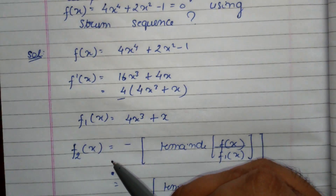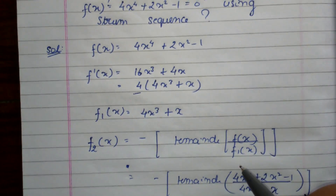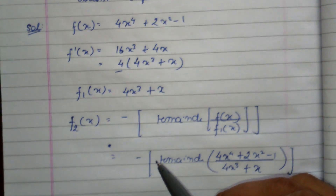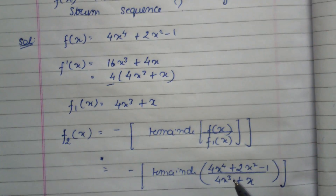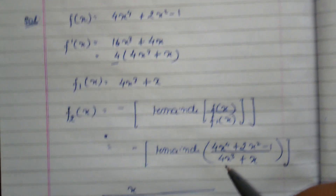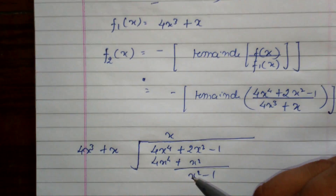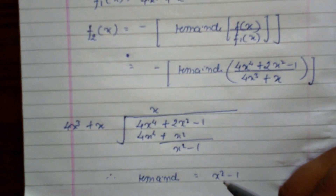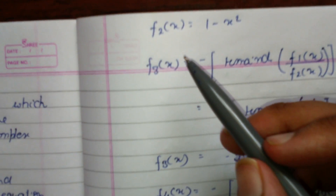The next step is to find f2(x), which equals the negative of the remainder of f(x) divided by f1(x). So we compute the remainder when dividing f(x) = 4x^4 + 2x^2 - 1 by f1(x) = 4x^3 + x. The remainder comes out to x^2 - 1, and negating it gives f2(x) = 1 - x^2.